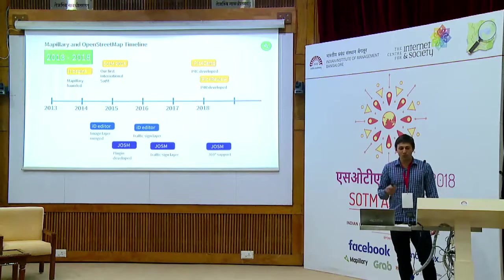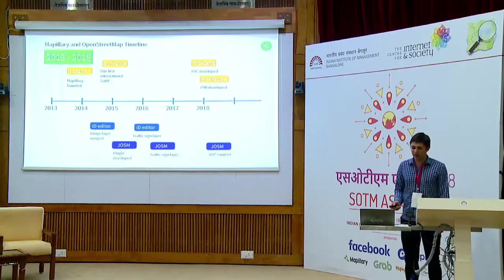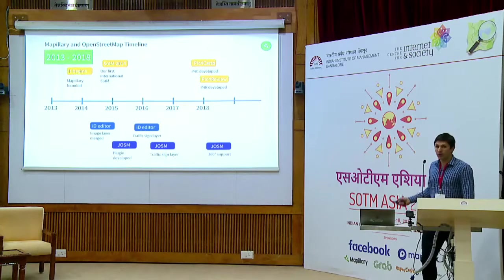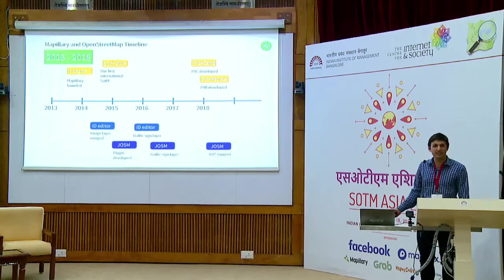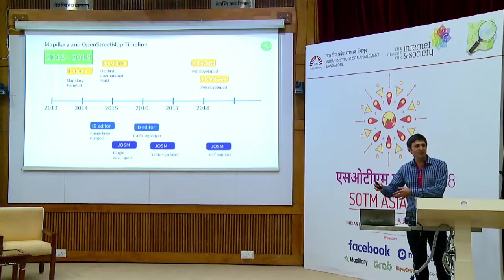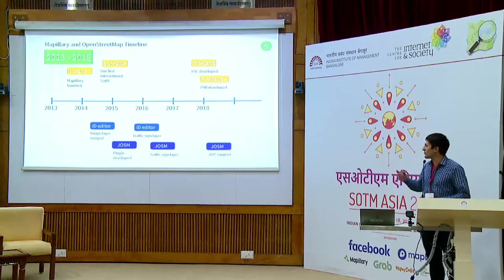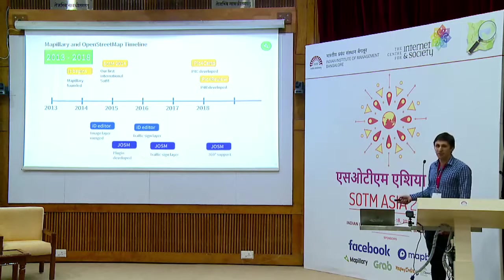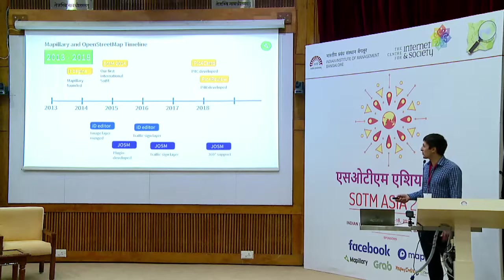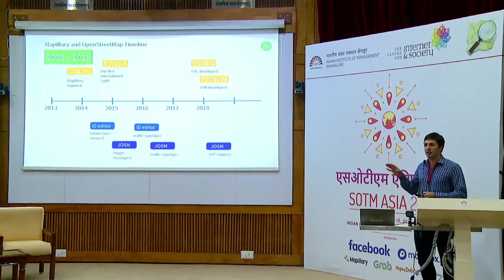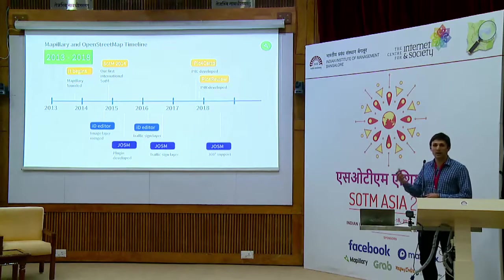How does Mapillary apply to OpenStreetMap? We've been around in the OpenStreetMap community since October 2013. Shortly after that, my colleague Peter did the first pull request in iD Editor and merged in images. With that in place, we could go to State of the Map International in Argentina and talk about it — that's where growth really kicked in with the OpenStreetMap community contributing imagery. Along the way the JOSM plugin came along, a Google Summer of Code project. Traffic signs were integrated, which means OpenStreetMap could now utilize computer vision to work out speed limits and turn restrictions — that was in JOSM.